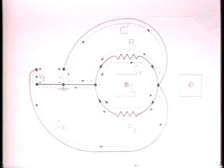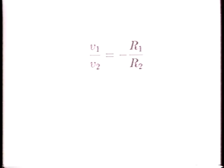The ratio of the voltages is the negative ratio of the resistances. In our case, the ratio of the resistances is 30 ohms to 10 ohms. Three. Just as we measured.